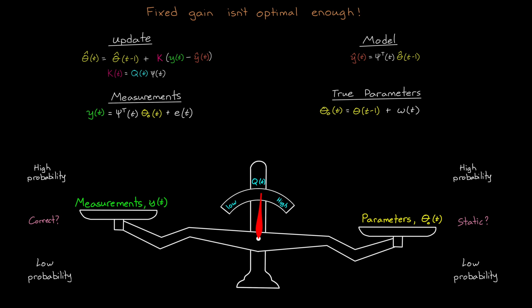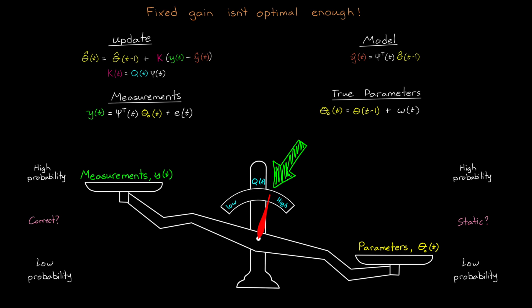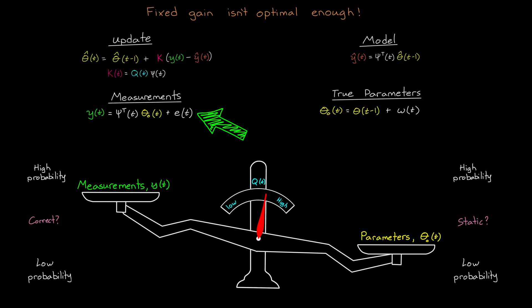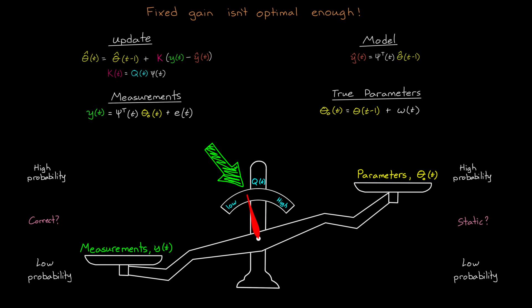So if the measured y is drastically different than the predicted y, we might be inclined to believe the measurement and want a large Q value to correct the parameters. However, if we know that there is a lot of measurement noise, then maybe we don't want to believe the measurement as much and only move the parameters a little bit despite the error, so a small Q value.